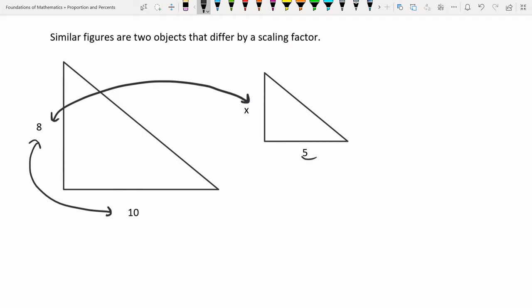Now what I recommend doing is writing it out like I showed in the previous video. Namely, 8 goes to X as 10 goes to 5. The same relationship there. If you write it this way, then what you'll see is that we can immediately make this into a proportion. And now to solve for X, all we have to do is cross multiply and divide.